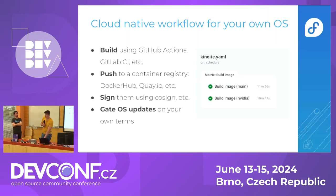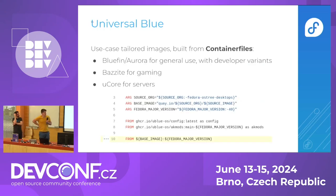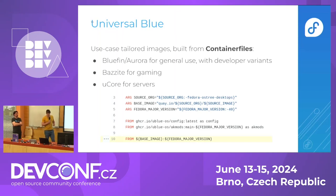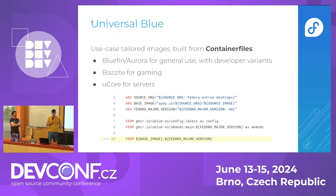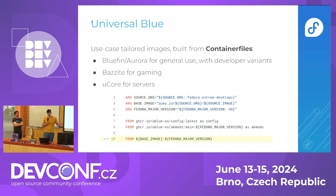There is one project that was briefly touched on this morning that really harnessed the power of those container files, and it's Universal Blue. Universal Blue produces a bunch of use-case-tailored images, and this is mostly from container files only. As you can see from this screenshot taken just before the presentation, it's really pulling those Fedora OSTree desktop images that Timothée builds, and then doing a bunch of customizations on top.